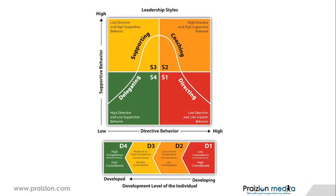At the bottom, we have the development level of the individual. In D1, the individual has low competence but high commitment — they're eager beavers, not very skilled yet but very committed. D2 is low to some competence, more than D1, but with low commitment. D3 is moderate to high competence with variable commitment, needing team support through participative leadership — team members are positioned around the individual who needs that support. D4 individuals have high competence, high confidence, and high commitment. This is good to know for your exam.